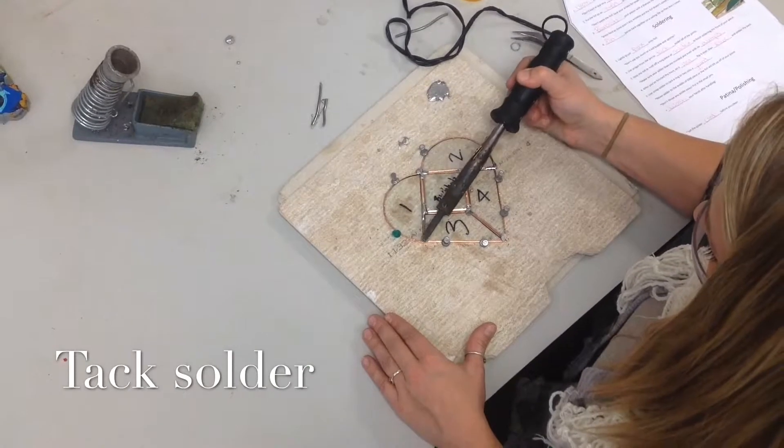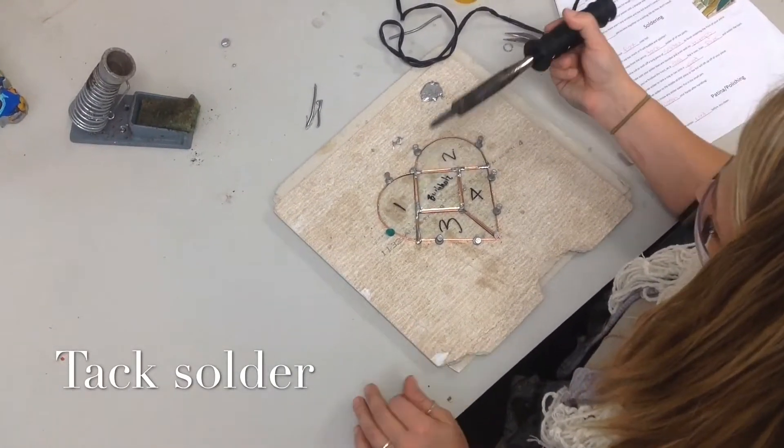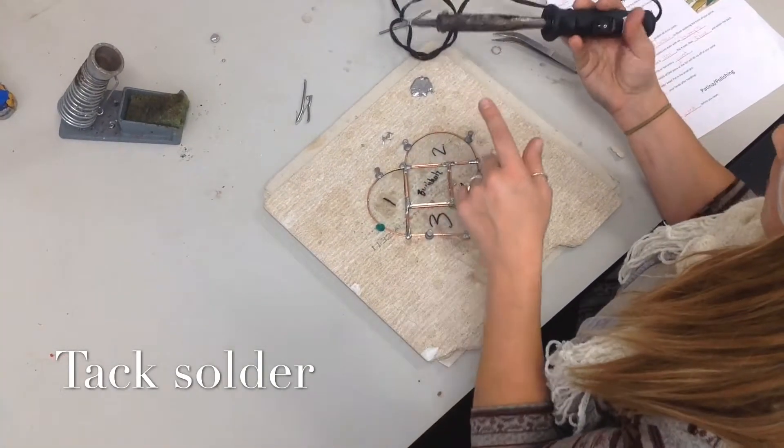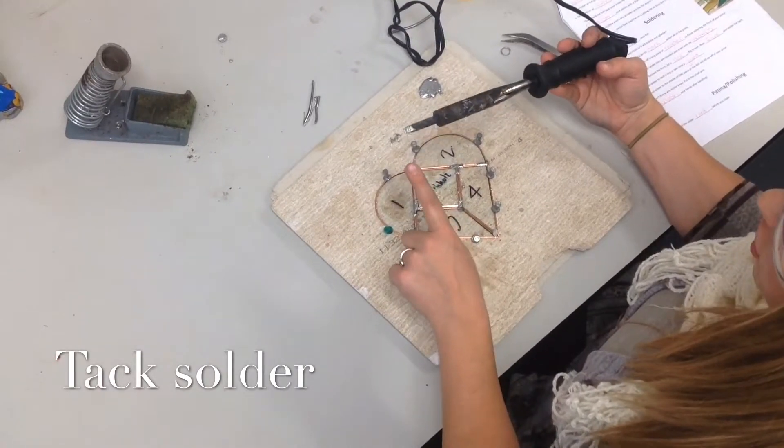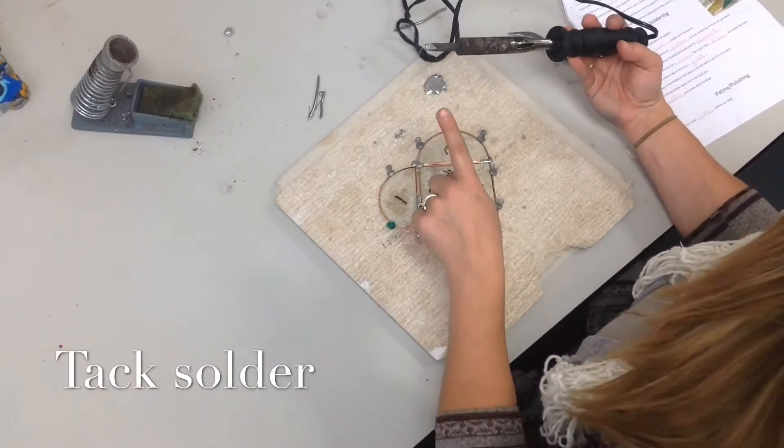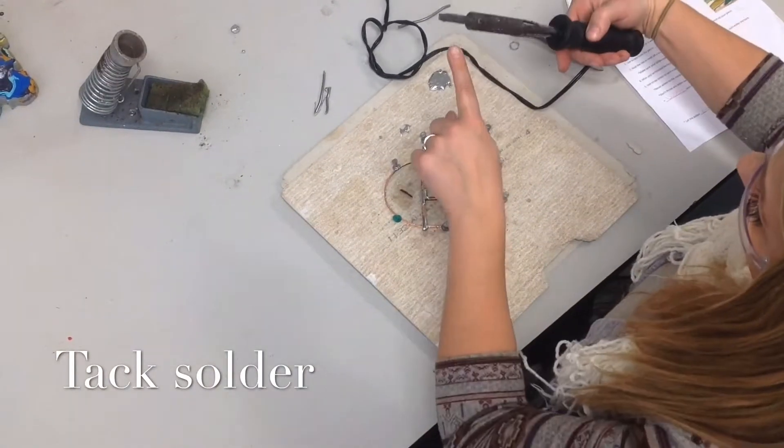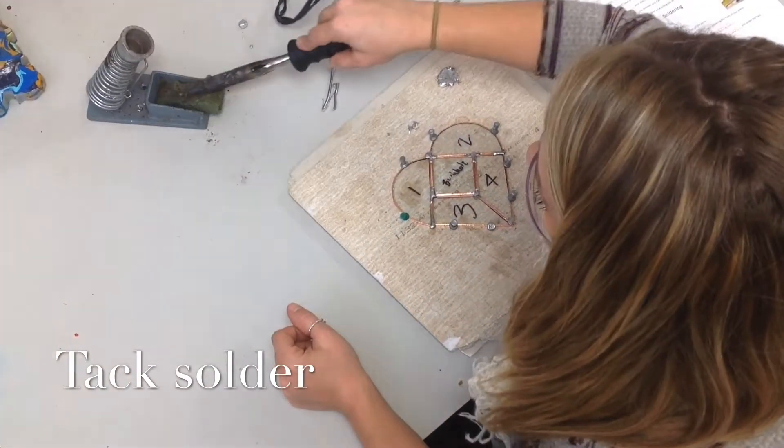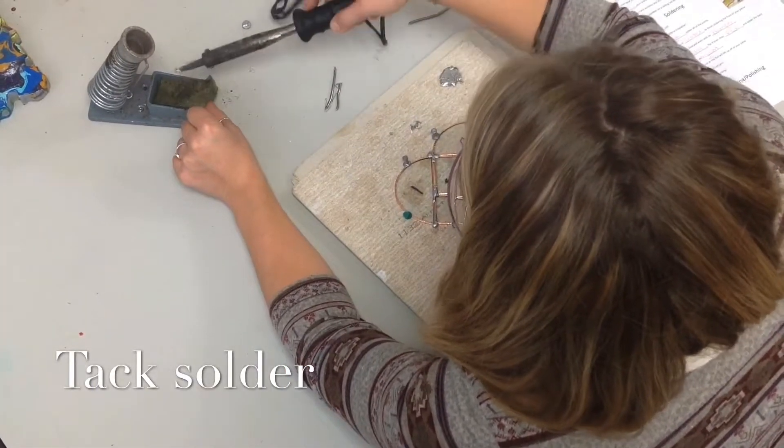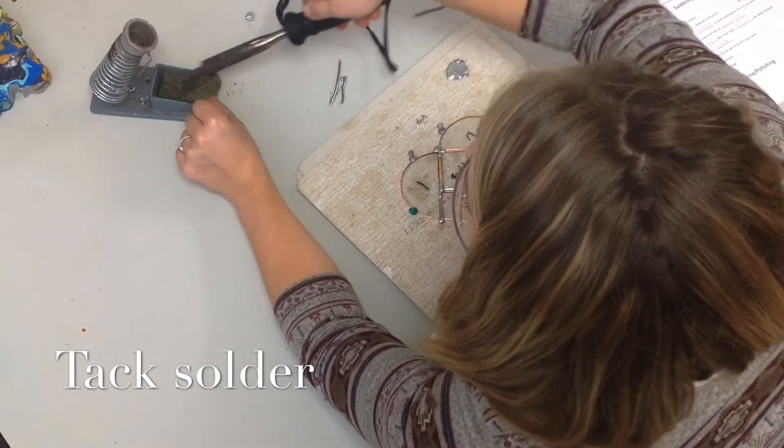If you notice that your iron is not melting the solder very well, you have to make sure that these tips are shiny. If the tip of your iron is not shiny, it's not going to melt your solder. To clean that off, see the side isn't very shiny, I'm going to wipe it on the damp sponge until it's shiny.